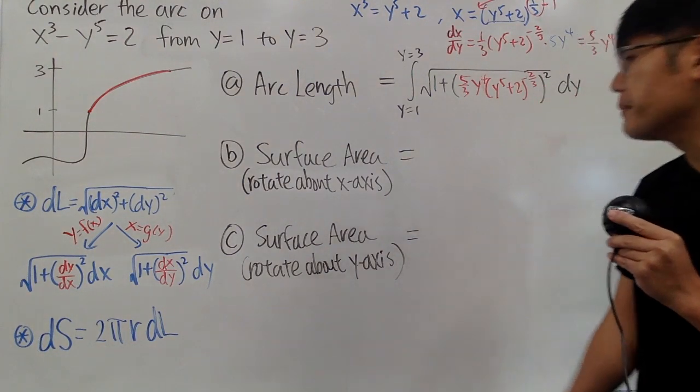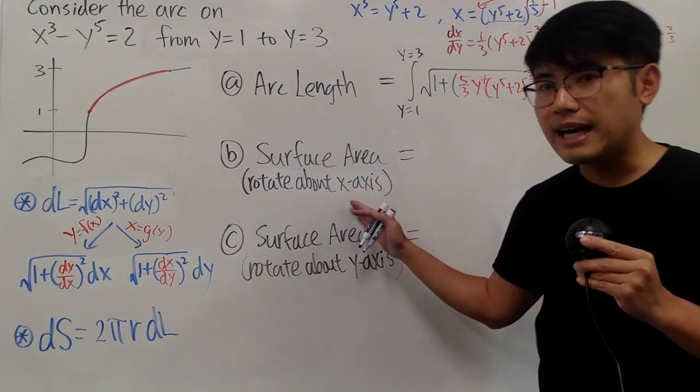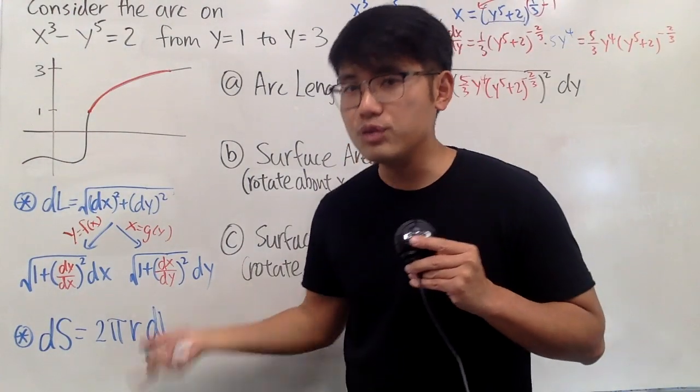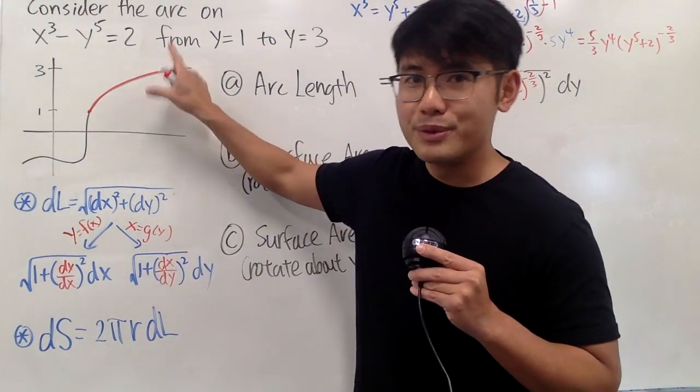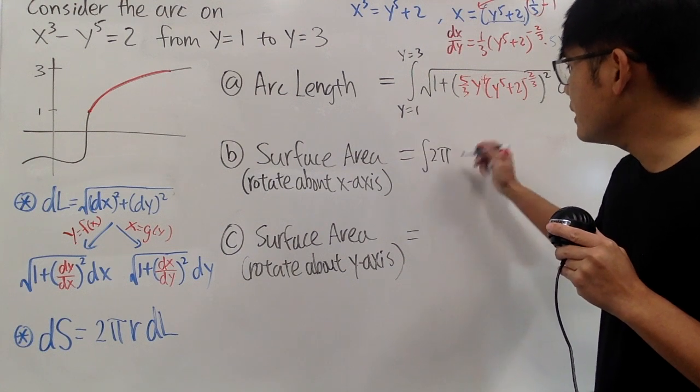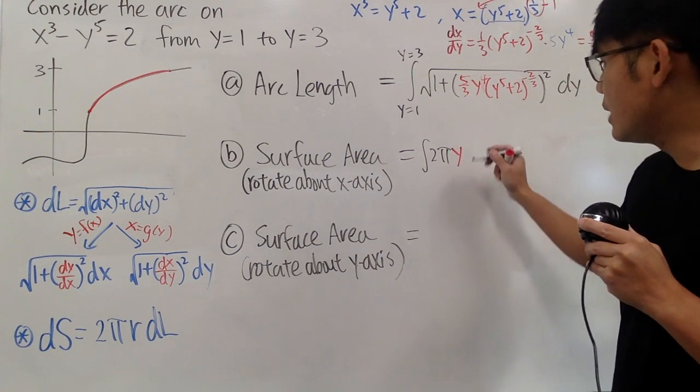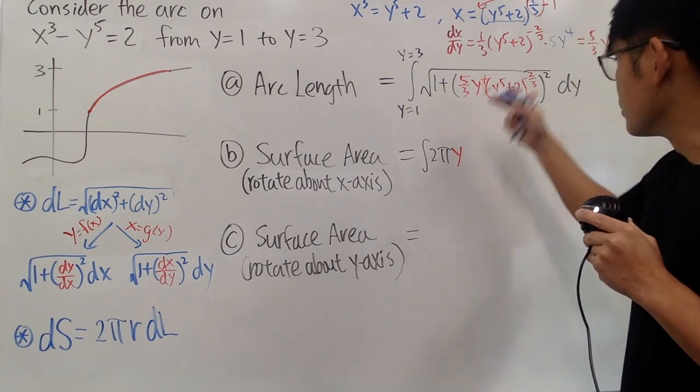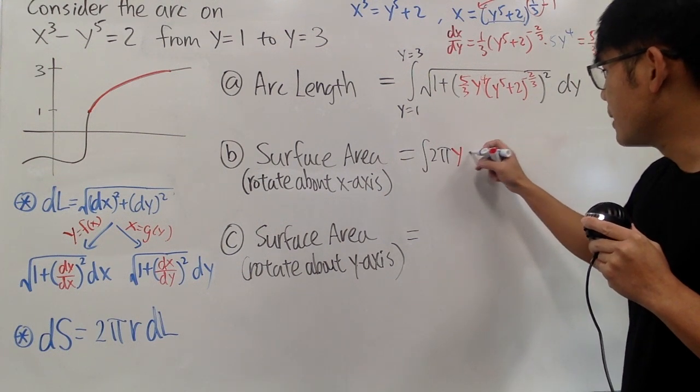Next, we have to have the surface area. Well, rotate about the x-axis. We know the radius will be the y value. So we will have the integral of 2 pi and then the y. And we also have to have the dL. The dL is just all that. So it's not that bad.